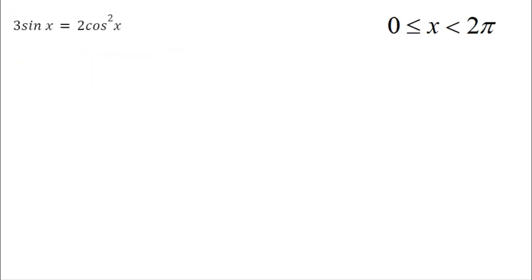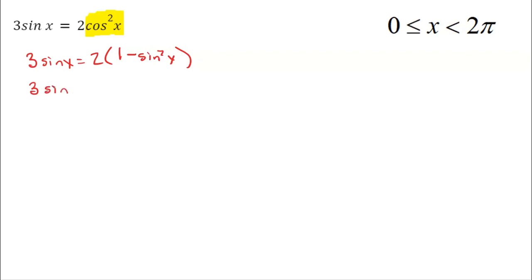In this one I have 3 sine of x equals 2 cosine squared of x. Once again I have two different trig functions and I can't do any factoring, but maybe I can do some manipulation. I'm going to replace that cosine squared with 1 minus sine squared from the Pythagorean identity, so I have 3 sine of x equals 2 times the quantity 1 minus sine squared of x. Now I'll distribute that 2: 3 sine of x equals 2 minus 2 sine squared of x.